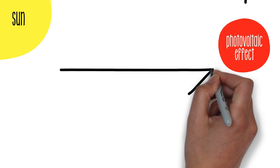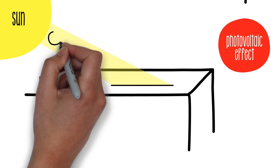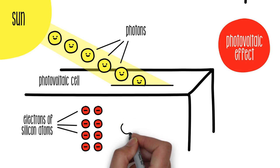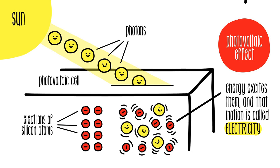Inside the panels, the energy coming from light particles is transmitted to the photovoltaic cell silicon atoms, which is a semiconductor device. The electrons of those atoms receive that energy, get excited, and that motion is called electricity.